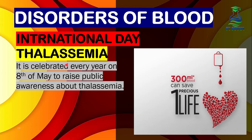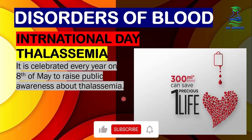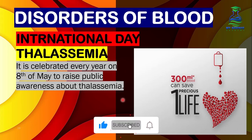International Day of Thalassemia is celebrated every year on the 8th of May to raise public awareness about thalassemia and highlight the importance of treatment and care for patients. In the next lecture, we will discuss the ABO blood group system.